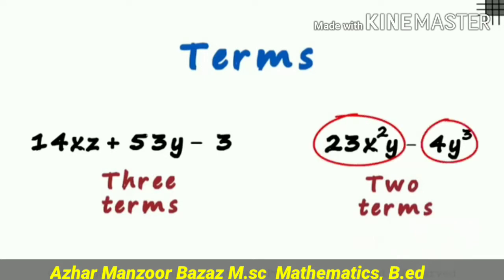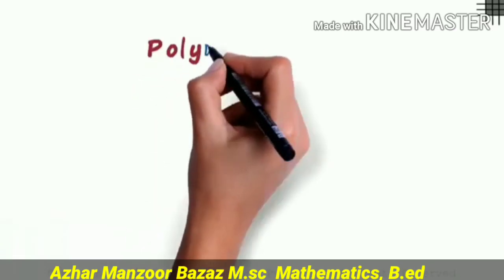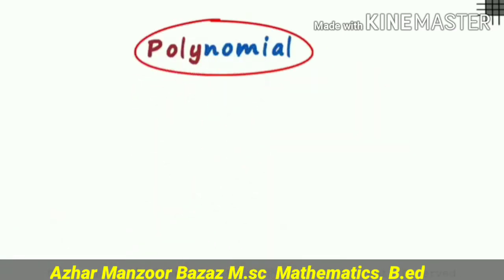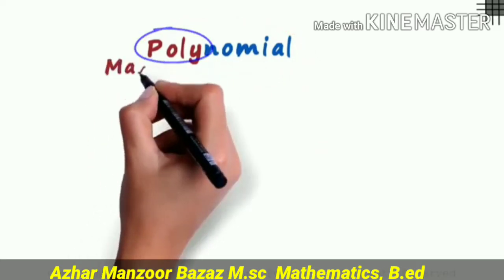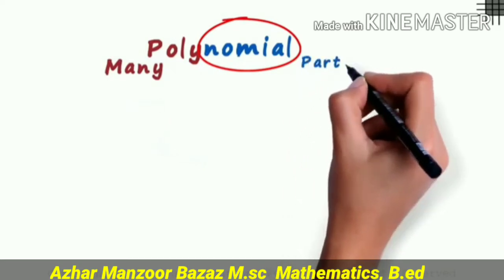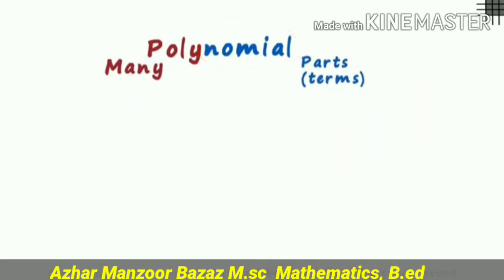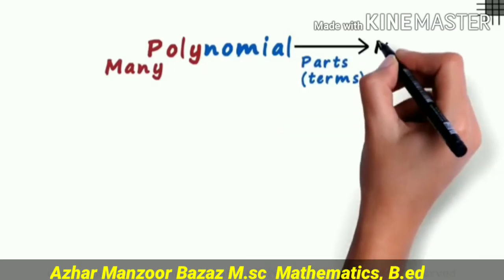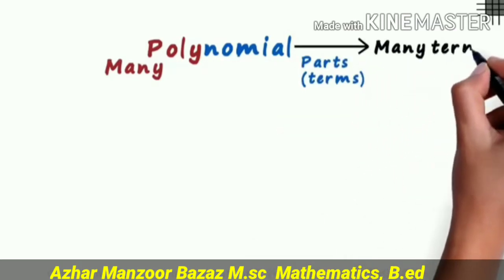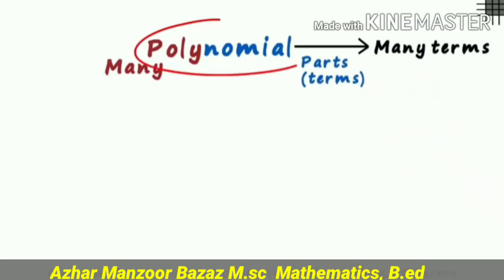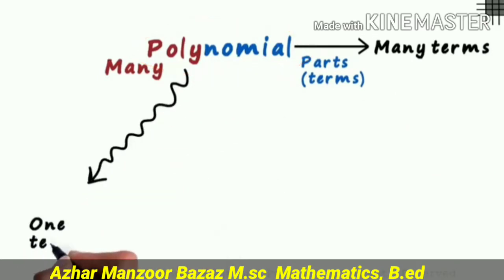Now I will make you understand what a polynomial is. I have written 'polynomial' in two colors — 'poly' in one color and 'nominal' in another. 'Poly' means many and 'nominal' means parts or terms. So a polynomial is an expression which contains one or many terms.